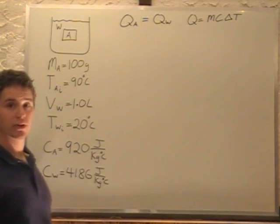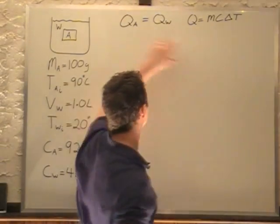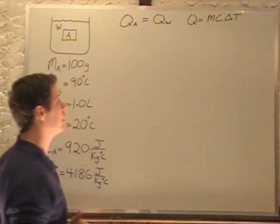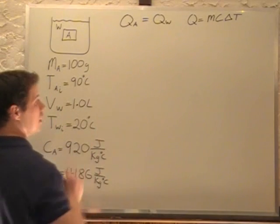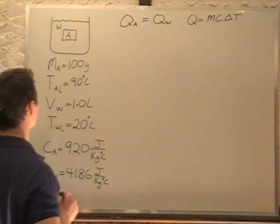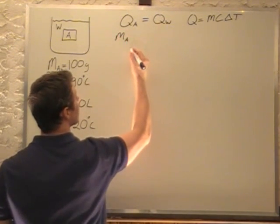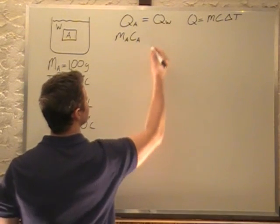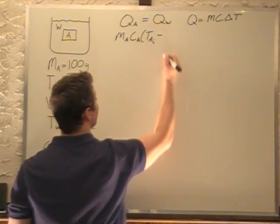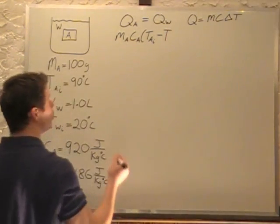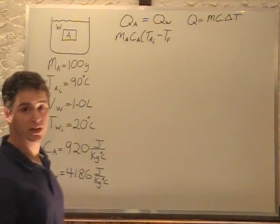We don't know our final temperature of the system — that's what we want to find. We're going to plug mcΔT in for aluminum and for water using initial and final temperatures, since delta T is a change in temperature. So Q_A equals mass of aluminum times C of aluminum times delta T of aluminum, which is T_aluminum_initial minus T_final. I'll just call it T_final since the whole system reaches the same final temperature.